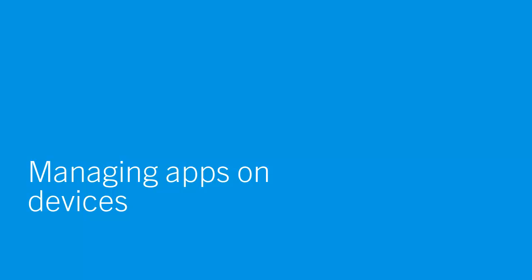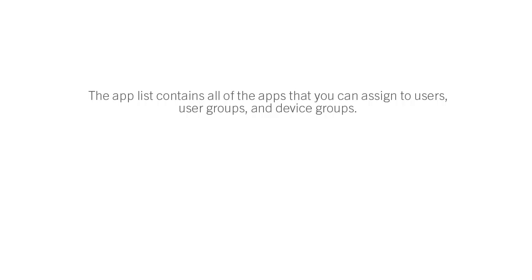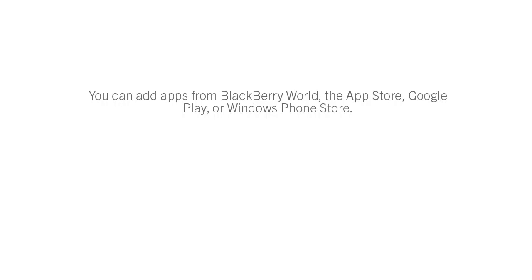Managing Apps on Devices. The first step is to add apps to the App List. The App List contains all of the apps that you can assign to users, user groups, and device groups. You can add apps from BlackBerry World, the App Store, Google Play, or Windows Phone Store.